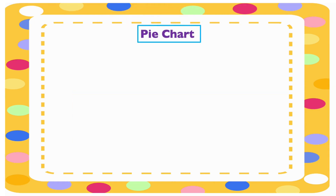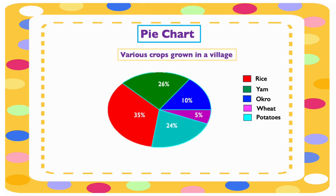This is a pie chart. Some graphs are called charts. A pie chart shows how a whole is divided into different parts. Percentages are used to show how much of the whole each category occupies. Look at this pie chart — it is showing various crops grown in a village. At the right side are the crops grown.